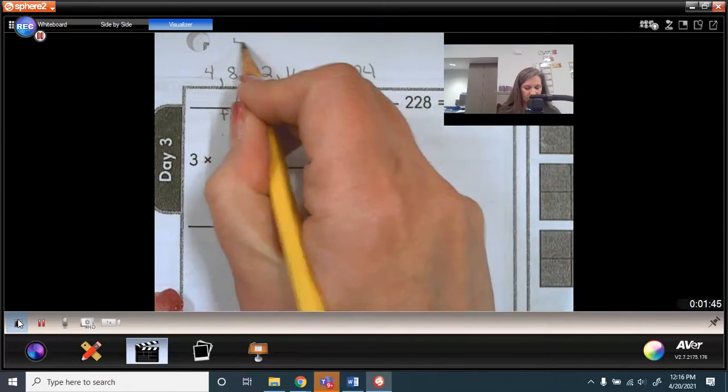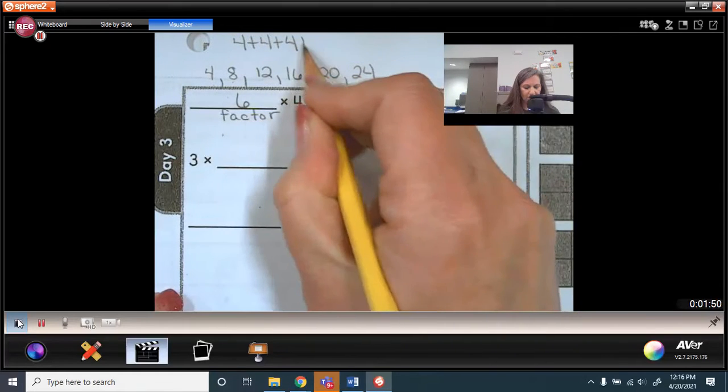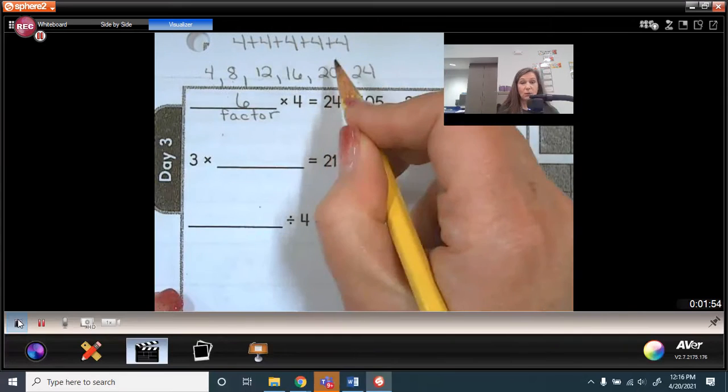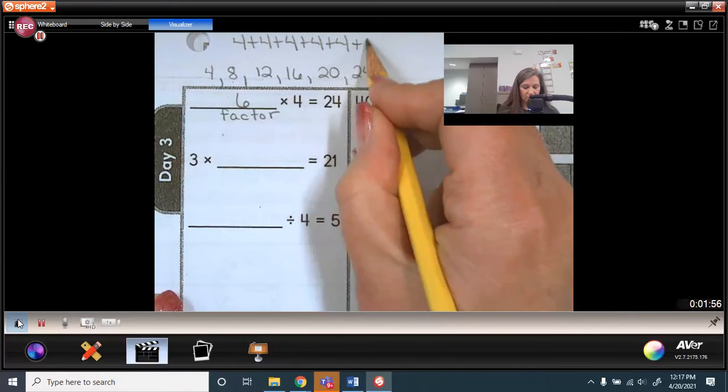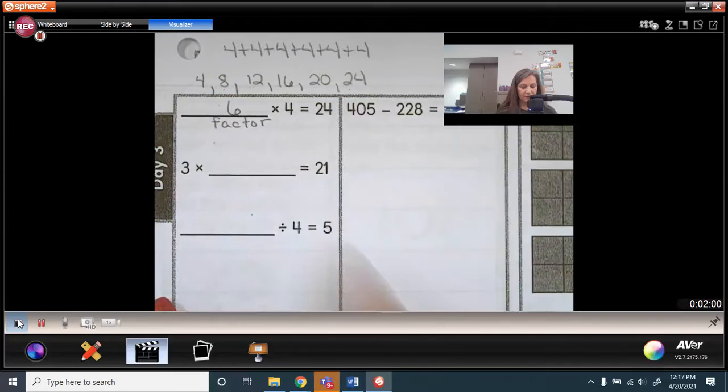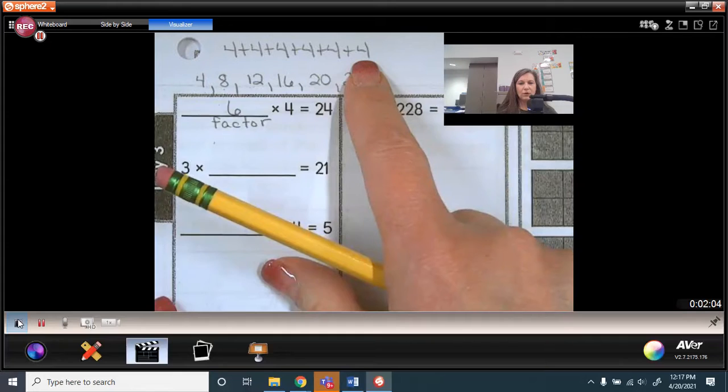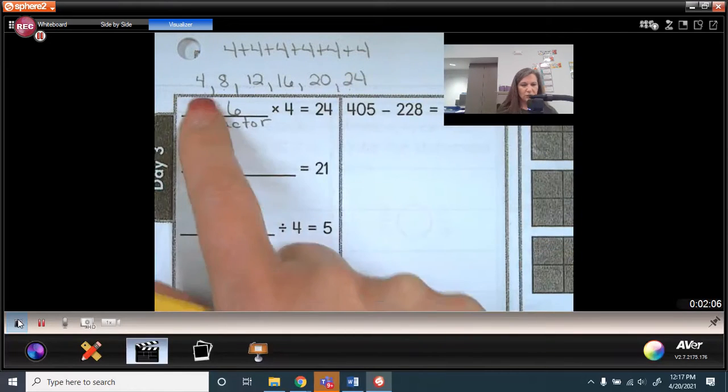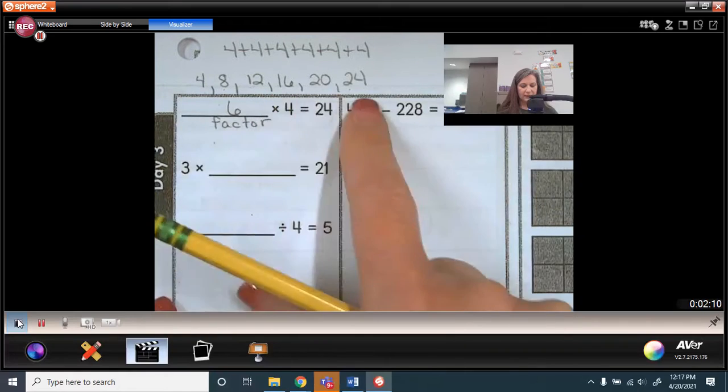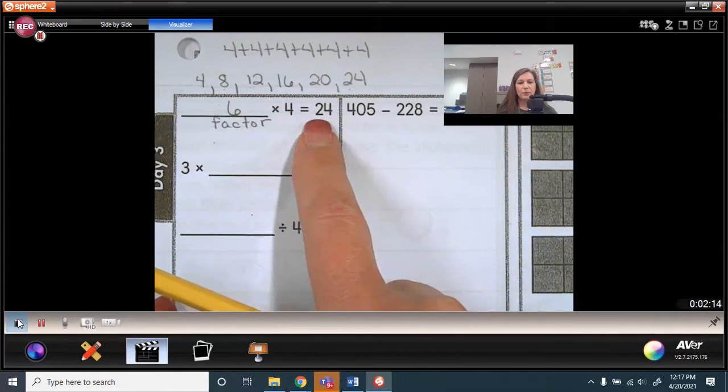Now, I could do 4 plus 4 is 8, plus 4 is 12, plus 4 is 16, plus 4 is 20, plus 4 is 24. So basically what I can do is, to find this missing factor, I can use repeated addition, or I can use skip counting by multiples of 4 to get how many groups of 4 to my total.